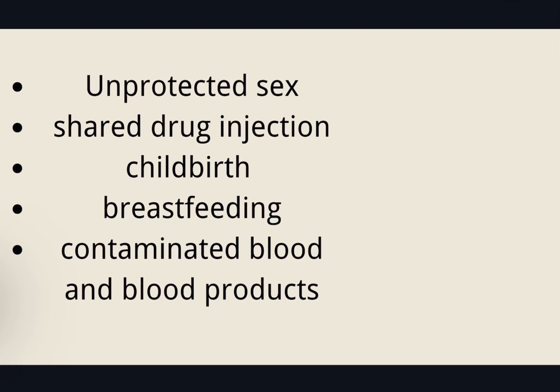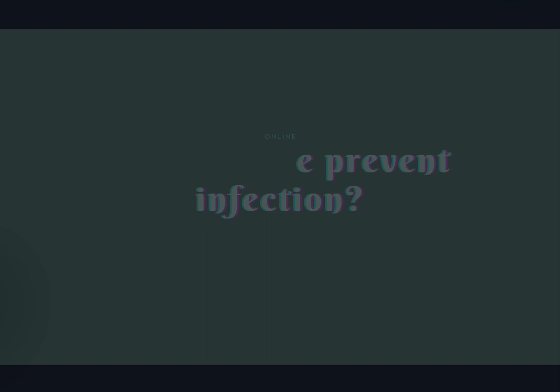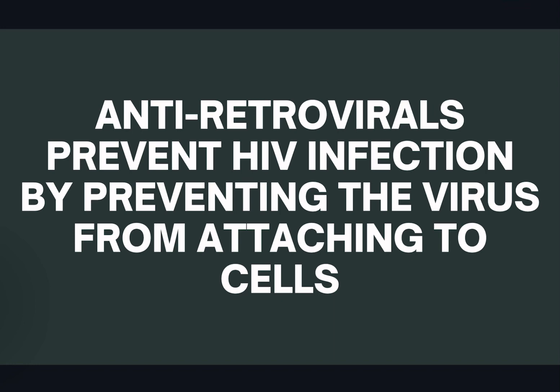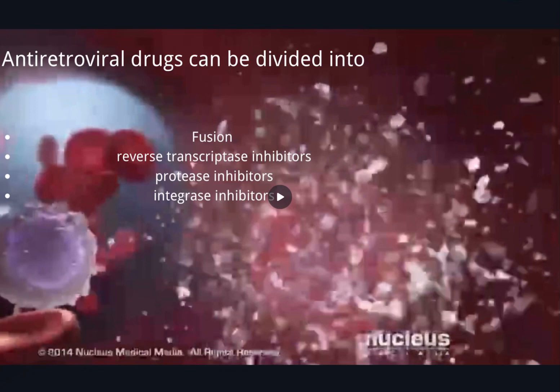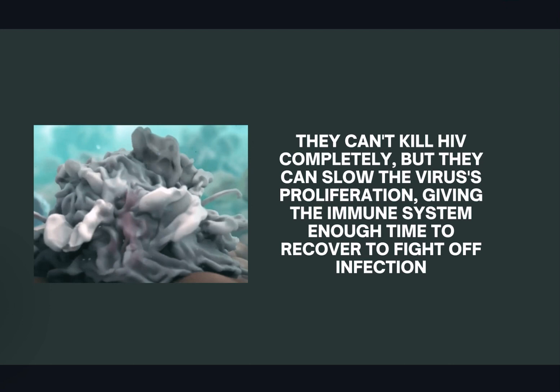You can get HIV through unprotected sex, sharing drug needles, childbirth, breastfeeding, and contaminated blood and blood products. Antiretroviral therapy prevents HIV infection by preventing the virus from attaching to cells. Antiretroviral drugs can be divided into fusion inhibitors, reverse transcriptase inhibitors, protease inhibitors, and integrase inhibitors. They can't kill HIV completely, but they can slow the virus's proliferation, giving the immune system enough time to recover to fight off infection.